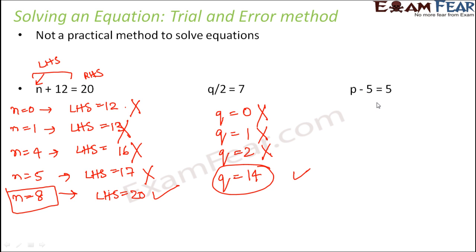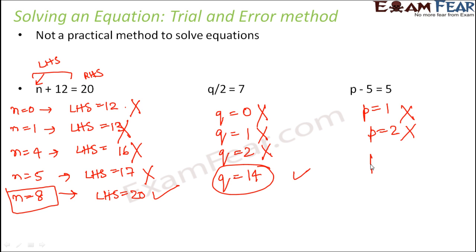For the third example, p minus 5 is equal to 5. If you start trying from 1, 2, 3 and so on, none of them work, and finally p equal to 10 is the solution. So when trial and error is not a practical method, how do we practically solve equations? Which is a better method?